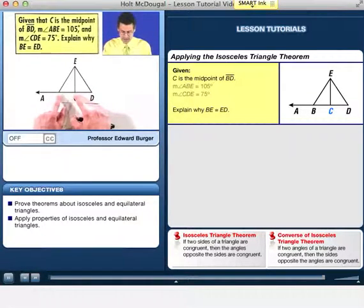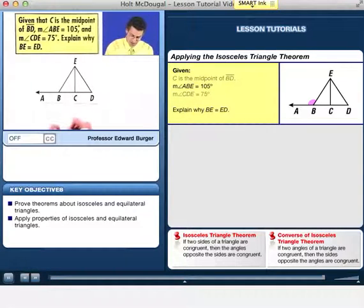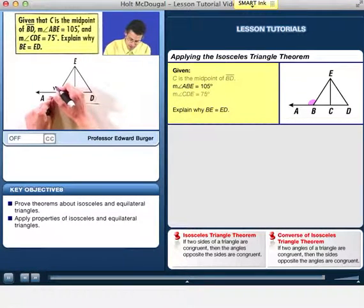Then we know that the measure of angle ABE, so that big angle right there, that obtuse angle, is 105 degrees.